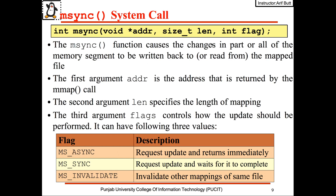msync causes the changes in part or all of the memory segment to be written back to or read from the mapped file. The first argument addr is the same address returned by the previous mmap call. The second argument len specifies the length of the mapping, and the third argument flags controls how the update should be performed.